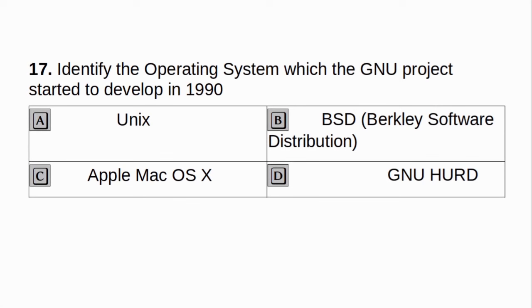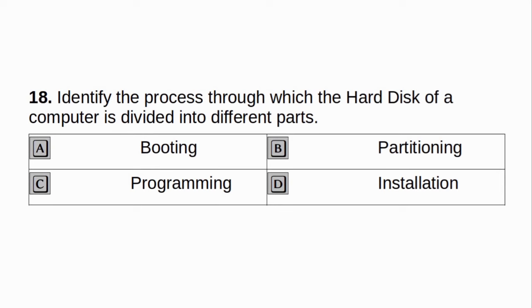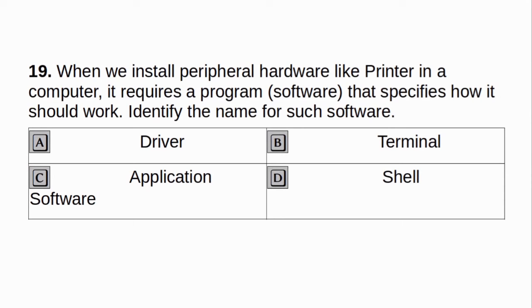Identify the operating system which the GNU project started to develop in 1990. a. Unix. b. BSD - Berkeley Software Distribution. c. Apple Mac OS X. d. GNU Hurd. Answer: d. GNU Hurd. Identify the process through which the hard disk of a computer is divided into different parts. a. Booting. b. Partitioning. c. Programming. d. Installation. Answer: b. Partitioning.